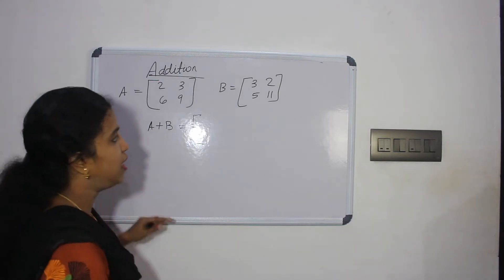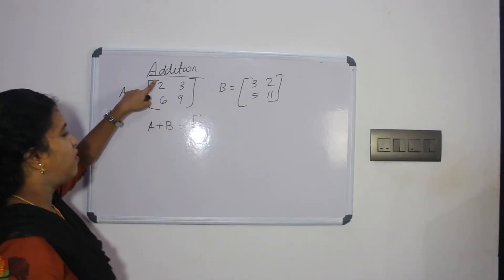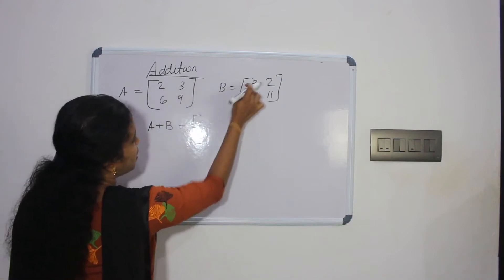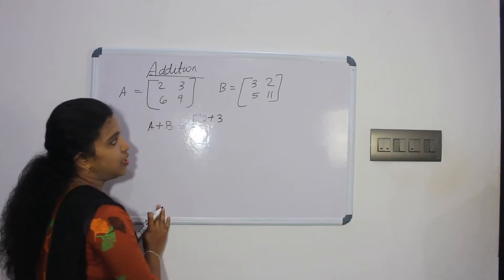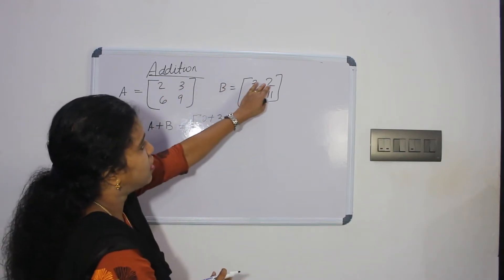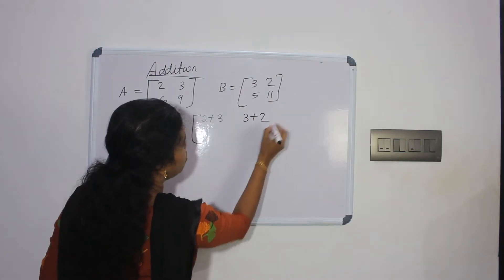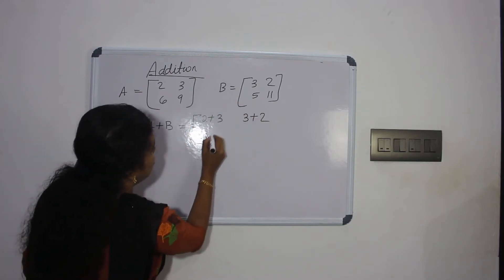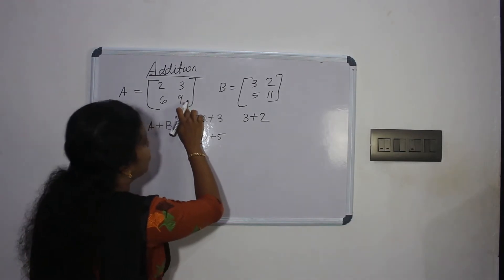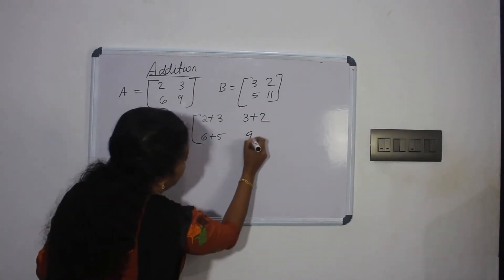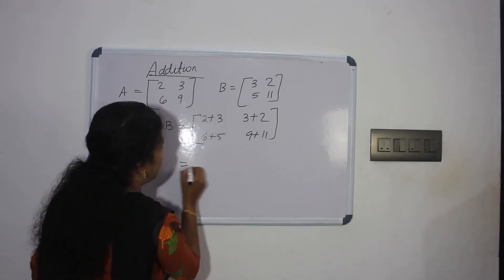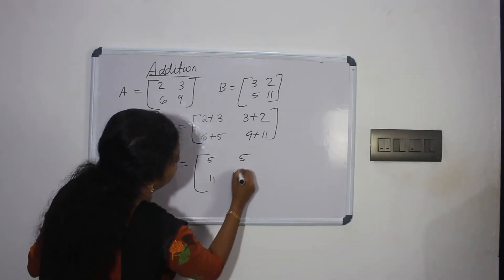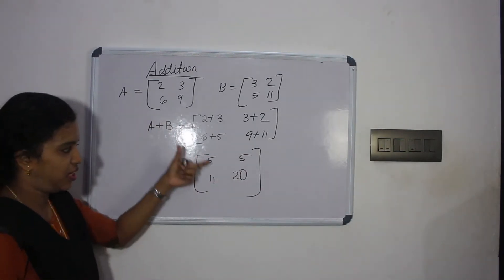We add the corresponding elements. 2 plus 3 is the first element, 3 plus 2 is the next, 6 plus 5, and 9 plus 11. The answers are: 5, 5, 11, 20. This is A plus B.